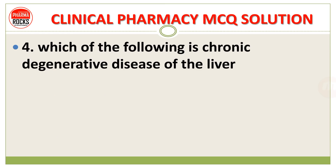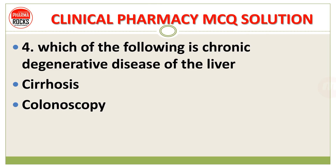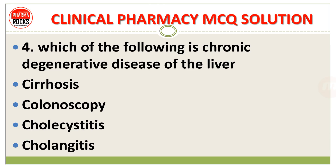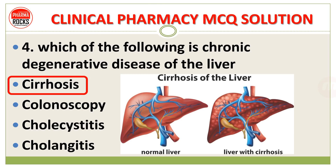Number 4: Which of the following is a chronic degenerative disease of the liver? Option A, cirrhosis; option B, colonoscopy; option C, cholecystasis; option D, cholangitis. The right answer is cirrhosis — cirrhosis of the liver. Here we can see the diagram comparing a normal liver and a liver with cirrhosis.